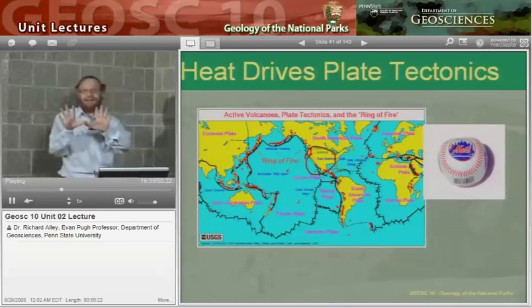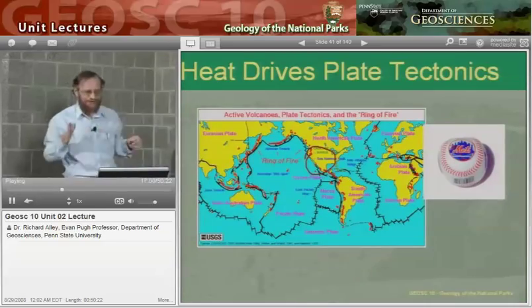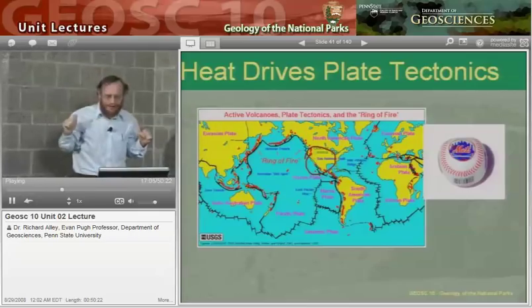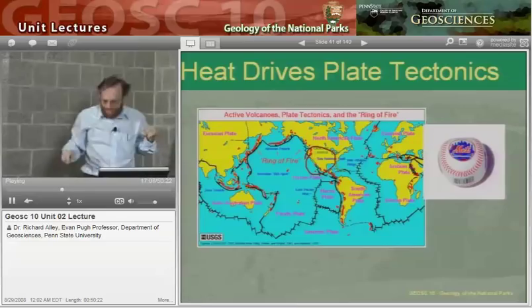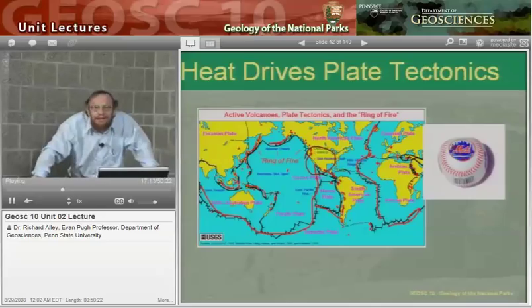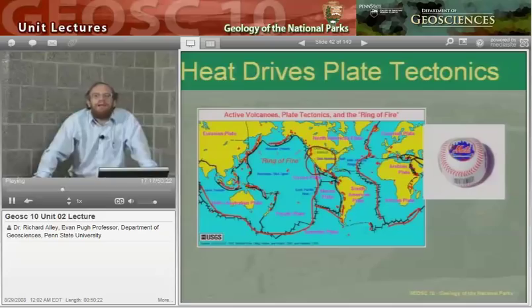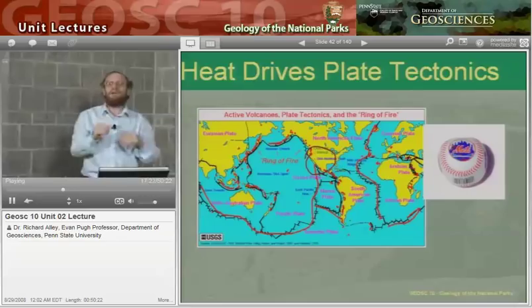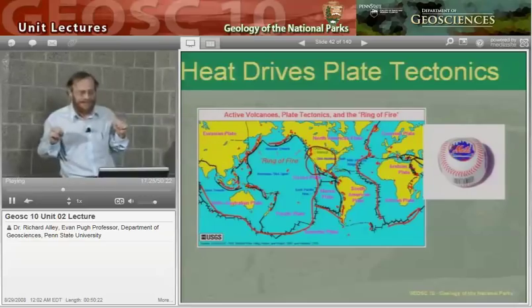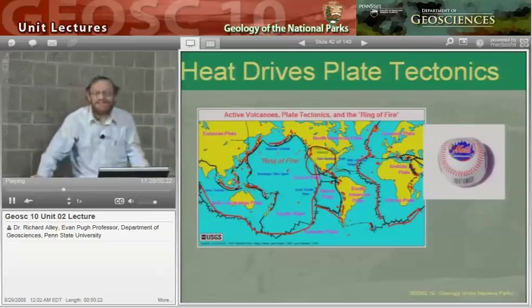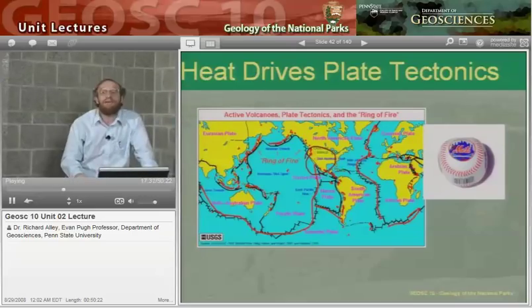We started in Death Valley, where you can see one of these spreading ridges trying to unzip the continent, and then you can follow that out and around. These are some of the plate boundaries. While plates — these big jigsaw puzzle chunks — often have a spreading ridge at the edge, sometimes they have something else at the edge. Some plate boundaries are shown by the red lines, but there are other sorts of plate boundaries we will revisit.